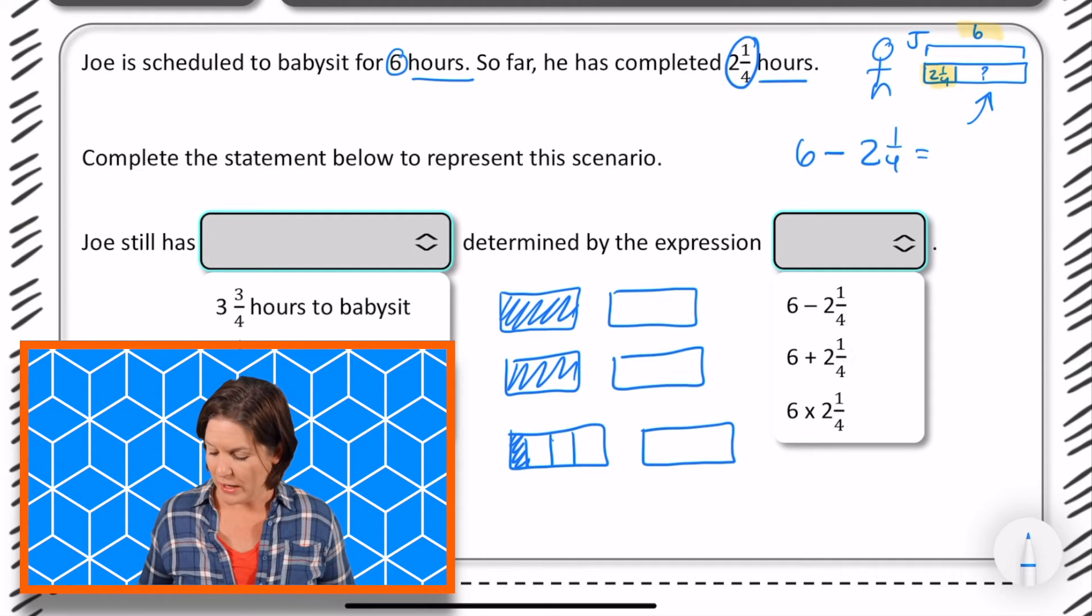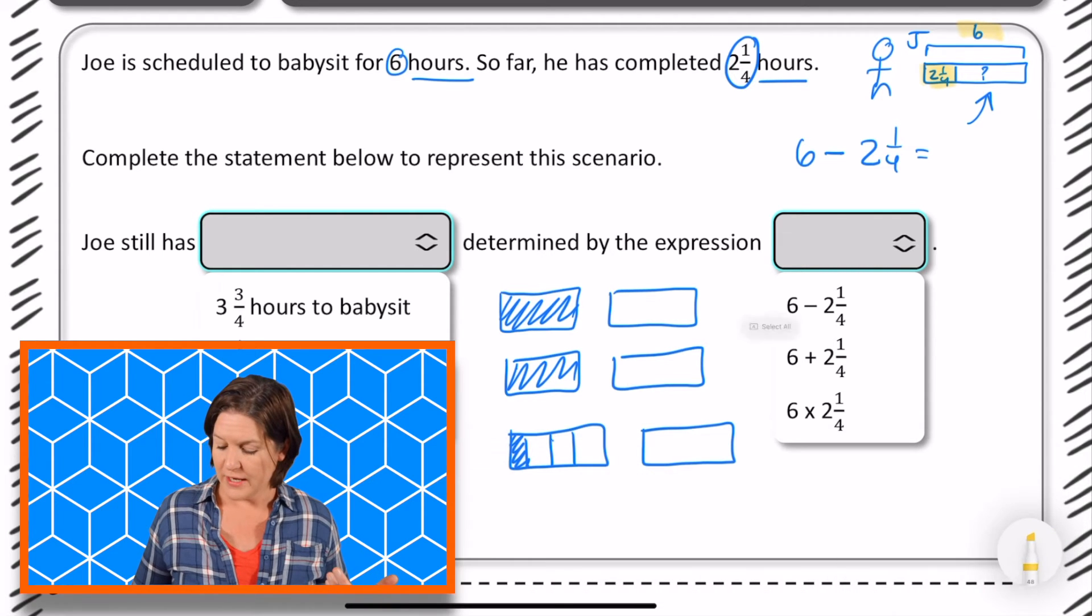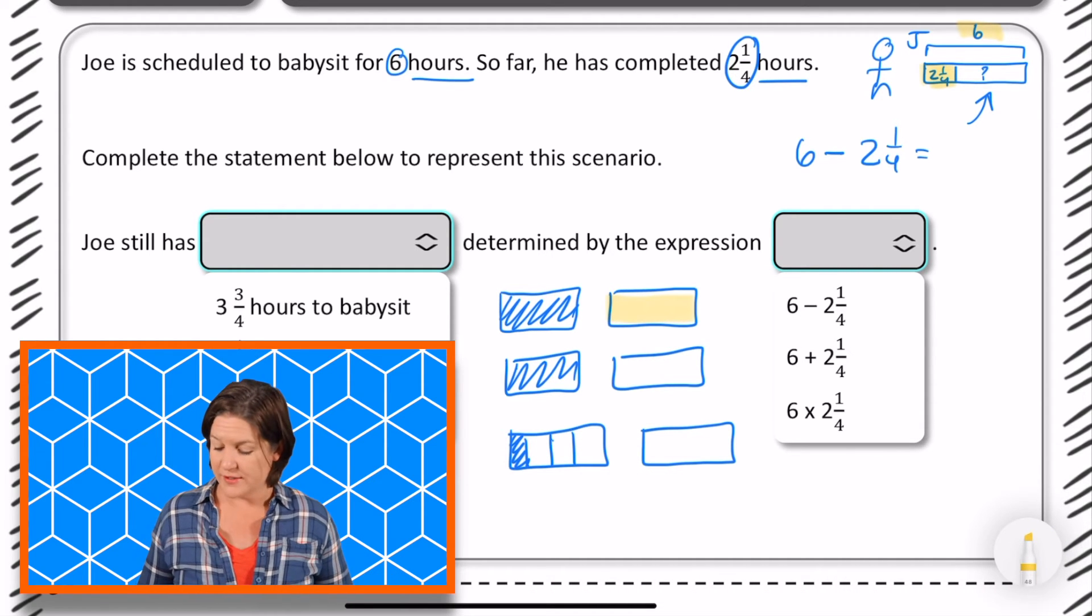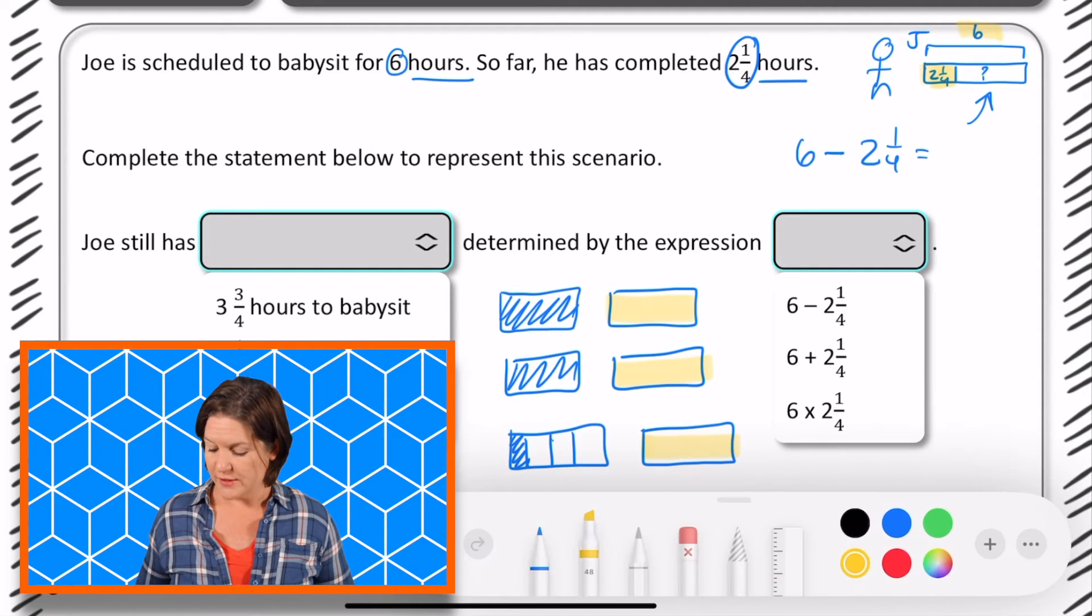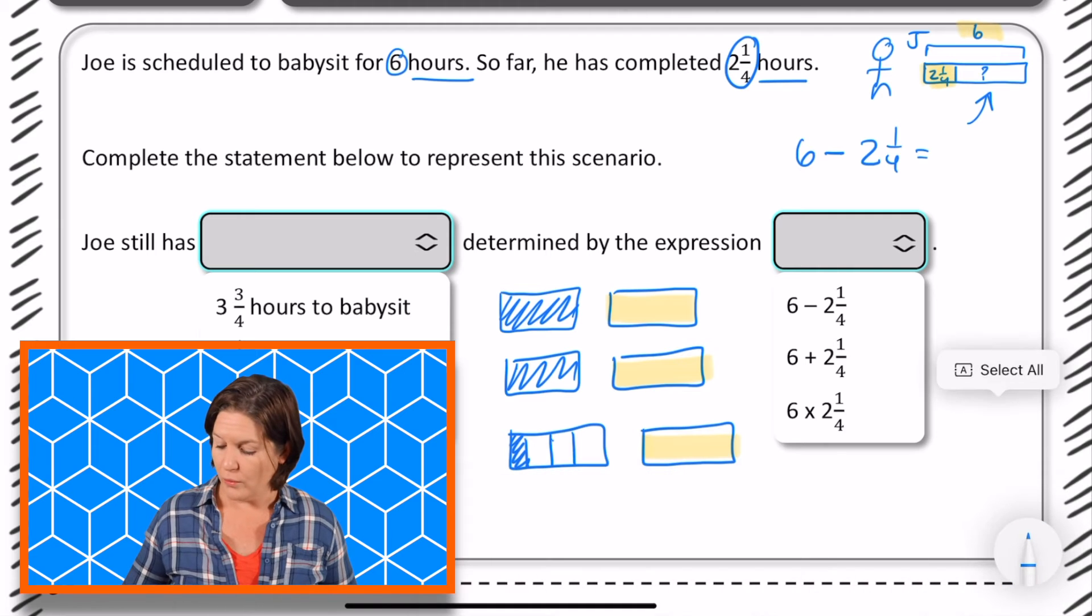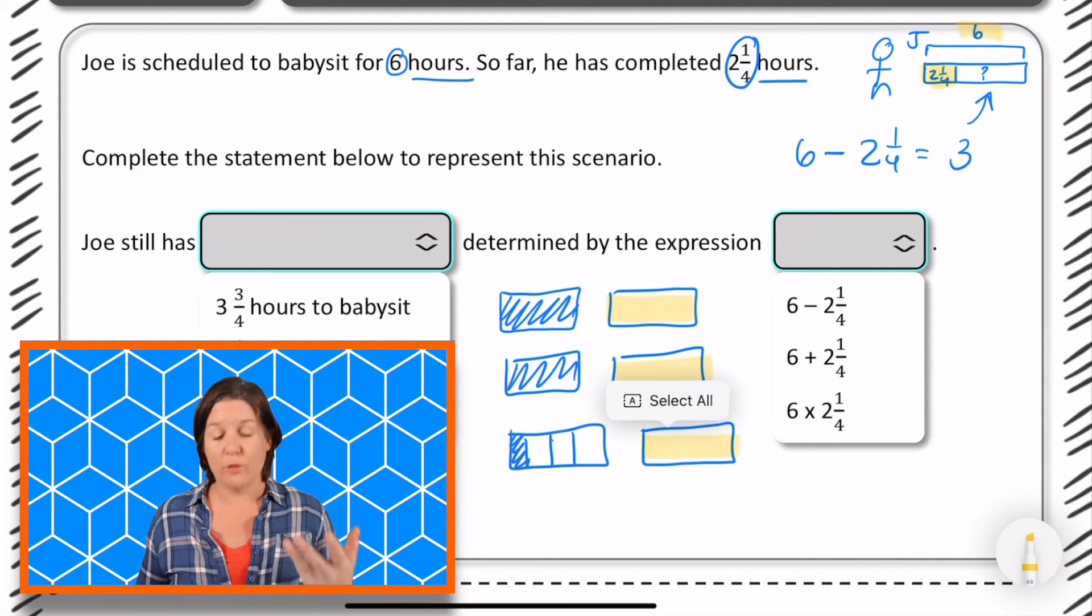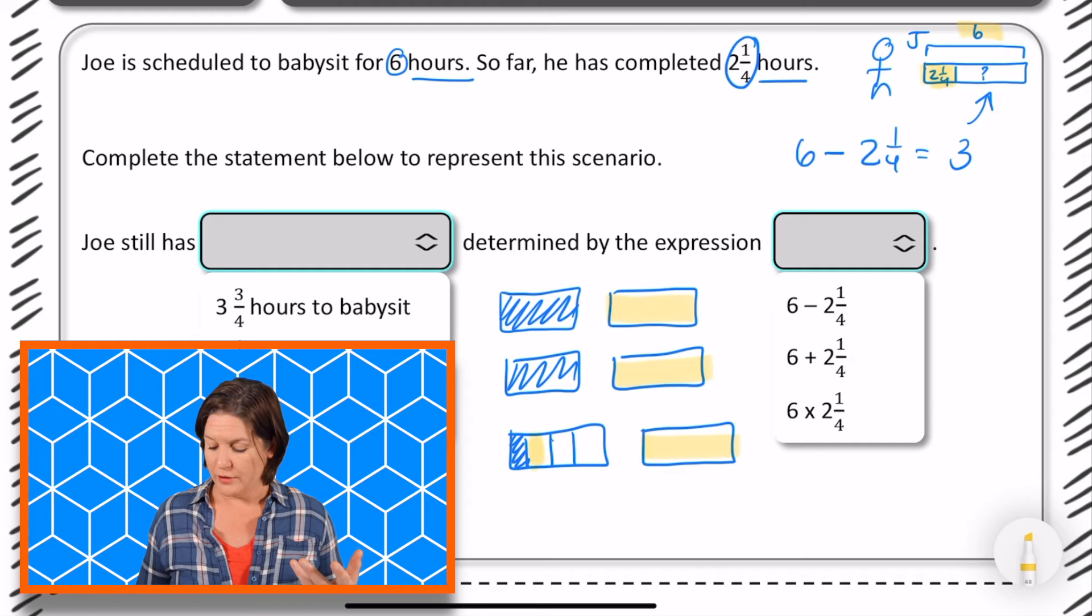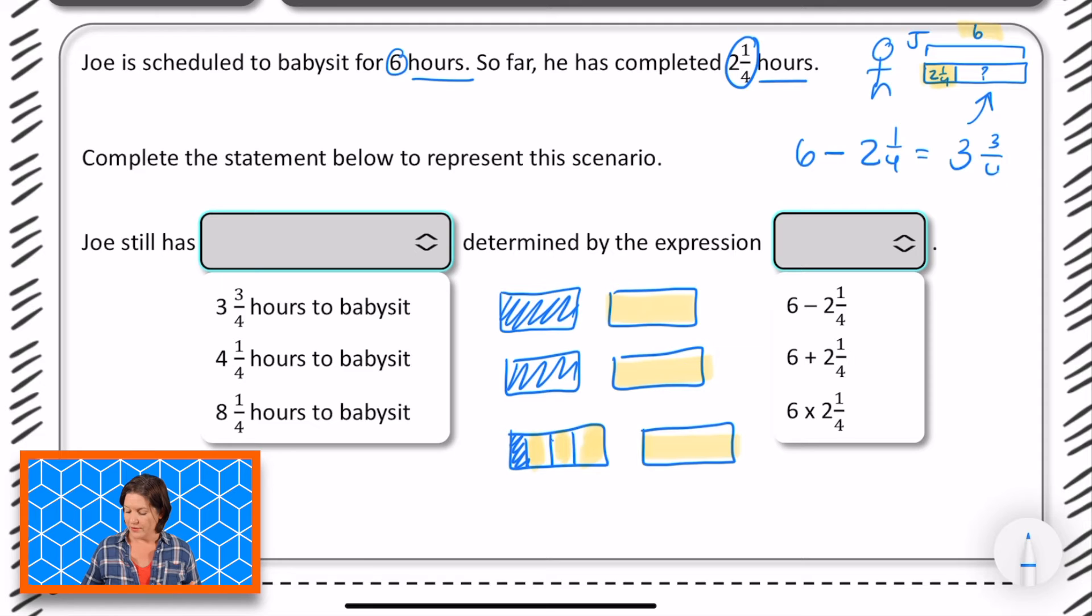Okay, so let's see how much he still has. Let's count the wholes. He has one whole hour that still needs to go, two whole hours that he still needs to go, three whole hours that he still needs to go, and that is the end of our wholes. So three whole hours and then here we have fourths. We have one fourth, two fourths, three fourths. So he still has three and three-fourths hours to babysit, which would be this one right here.